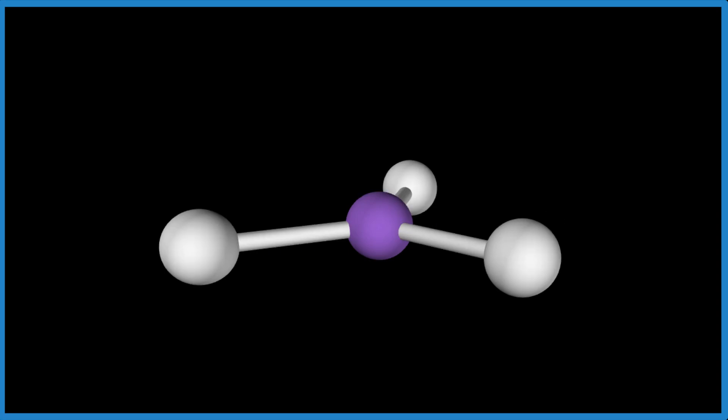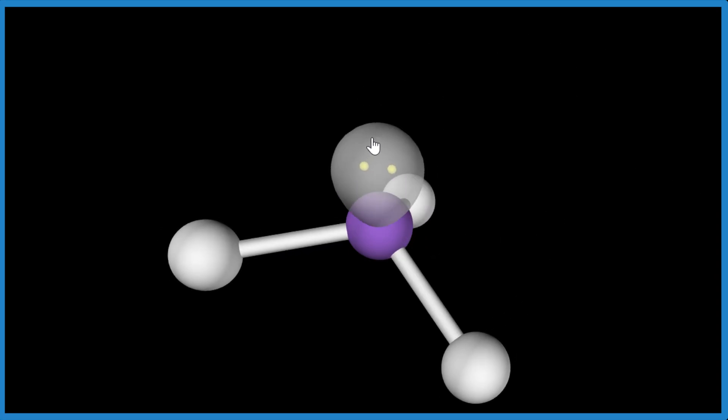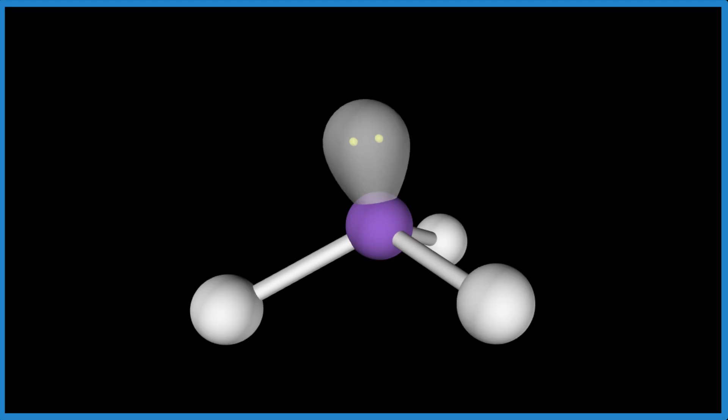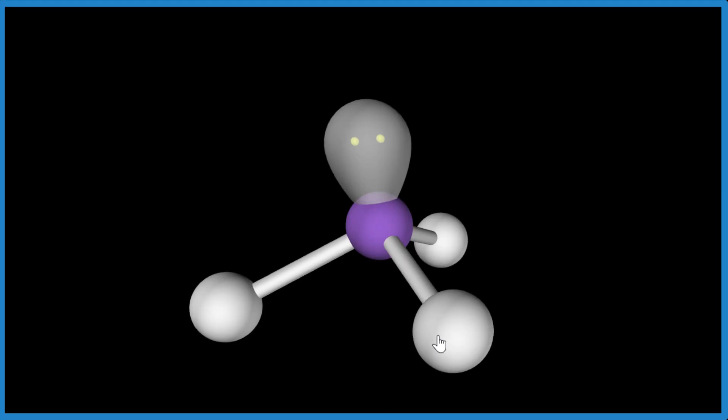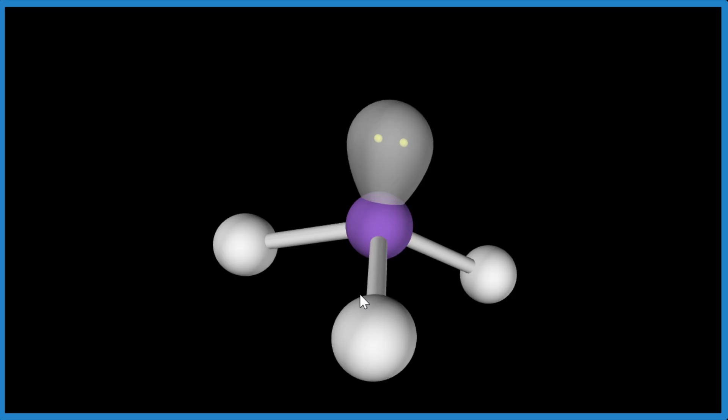But don't forget about that lone pair. That pushes everything down, and that's what gives us that trigonal pyramidal molecular geometry. The lone pair pushes these things down. It occupies space, gives us that trigonal pyramidal molecular geometry.